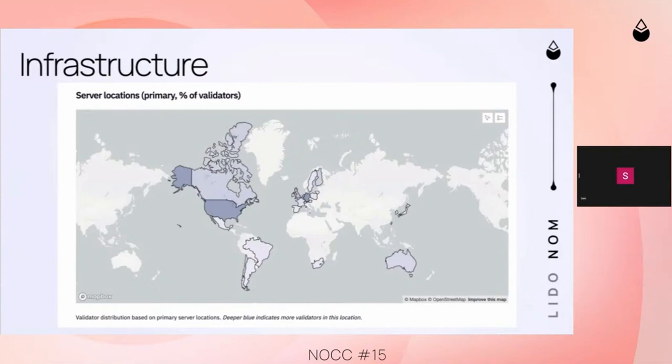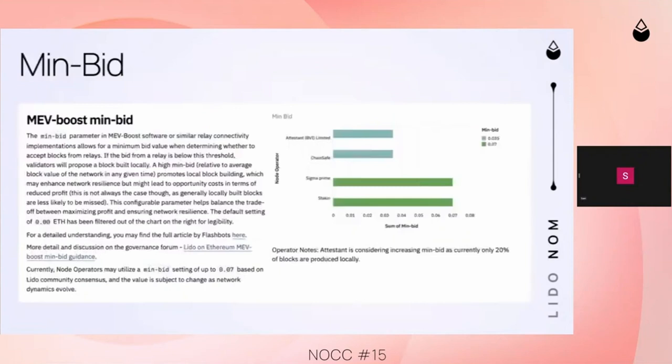That's also due to the work these node operators have been doing on performance increases. Generally, we're not looking for perfect performance — the goal here is to maximize distribution. Of course, if we can do that at a higher effectiveness, that's always good.